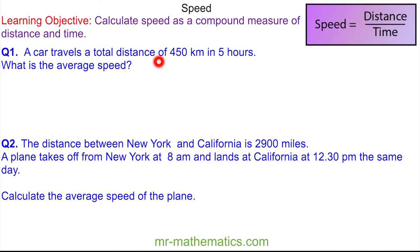a car travels a total distance of 450 kilometers in a time of five hours. So we have the speed is equal to the distance which is 450 kilometers, and it's important to include the units, divided by the time of five hours. We can work out 450 divided by five